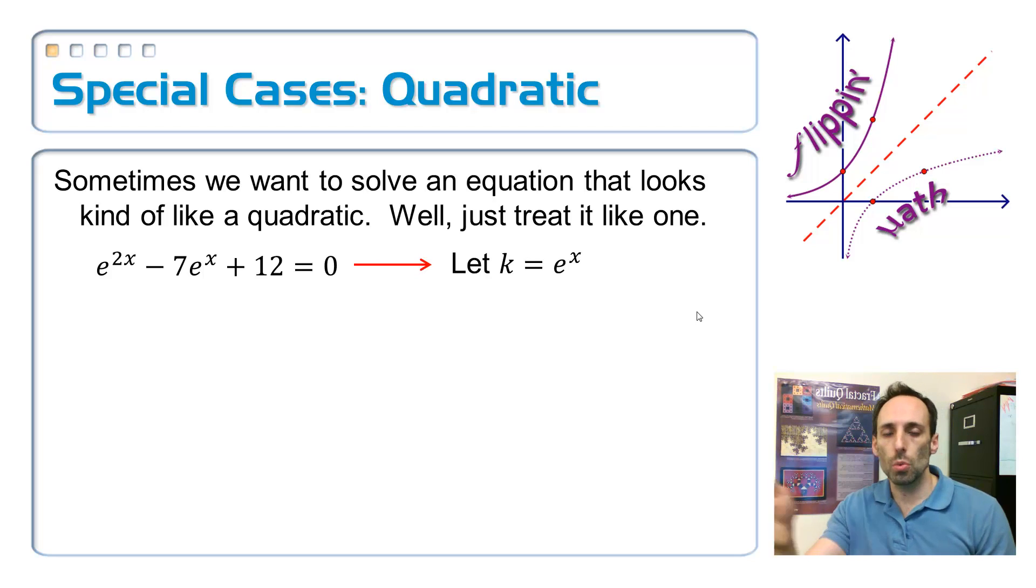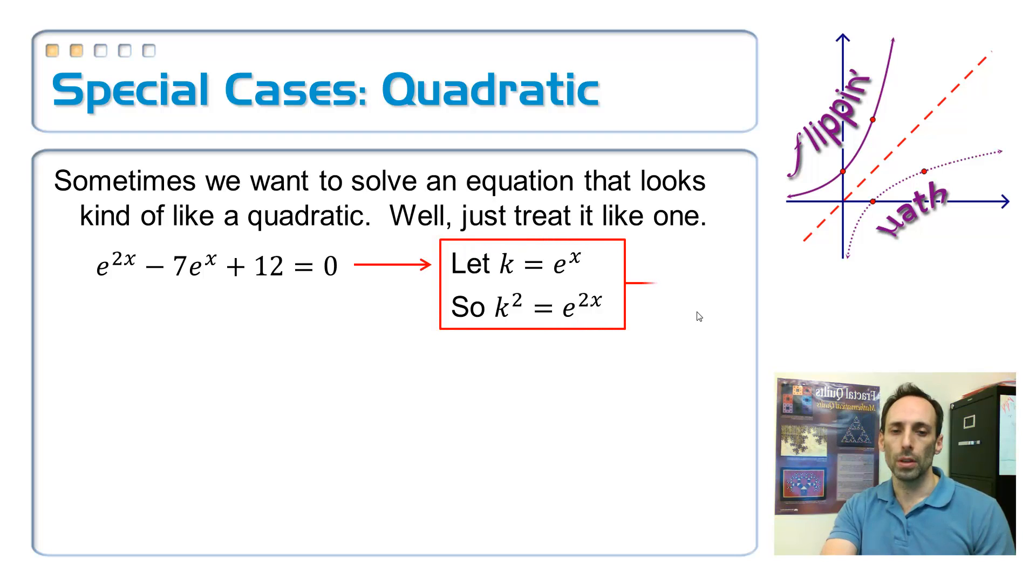That means if I square both sides, k squared is equal to e to the 2x. Now I'm going to rewrite my equation in terms of k's instead of e's, right? So here we go. I'm going to rewrite this equation. This becomes a k squared minus 7k plus 12, right? It's right there. Just doing my substitution. I can solve that quadratic. I could factor that. I'm going to factor it like so. k minus 3 and k minus 4.